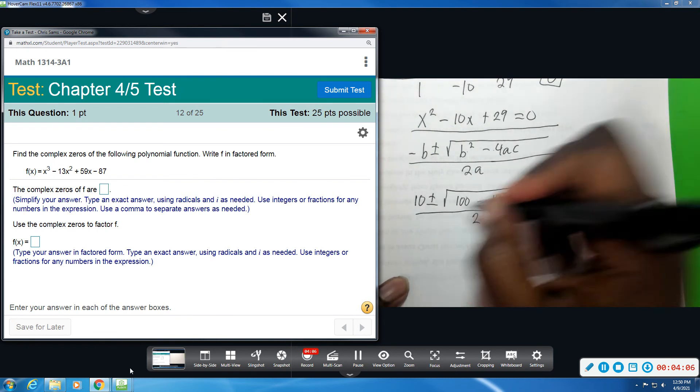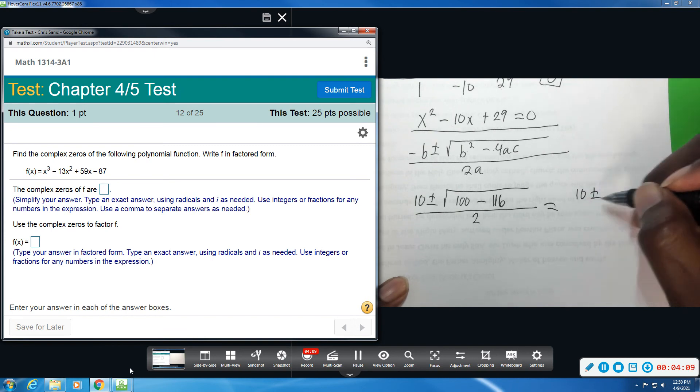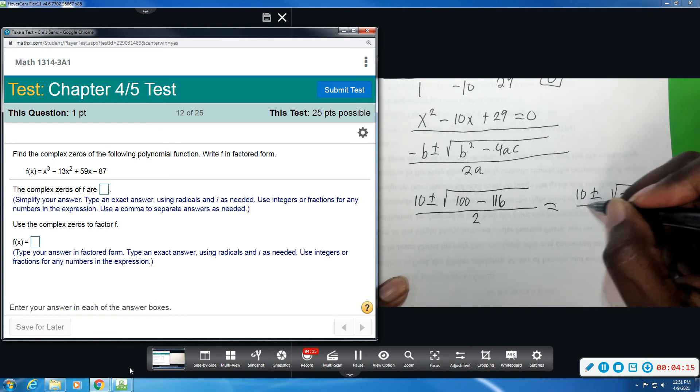Continuing simplifying, we have 10 on the outside, plus or minus. 100 minus 16 will give us the square root of -16 divided by 2.